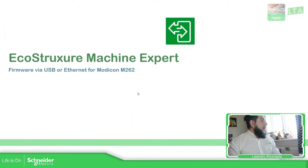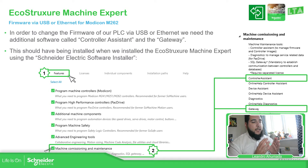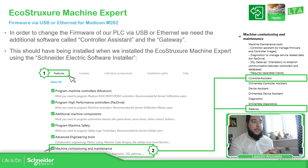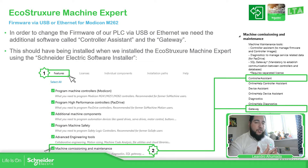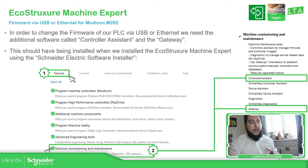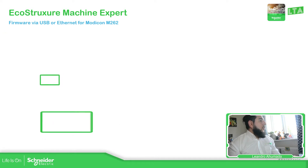The idea here is to first have the machine commissioning maintenance already selected in the features tab when we have the EcoStruxure Electric Server installer, which has the controller assistant that generates the files and also the gateway that allows us to connect using the Ethernet or the USB of our laptop to the controller. Otherwise, even if we have the controller assistant but not the gateway, you cannot connect.